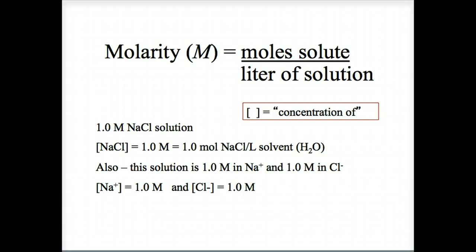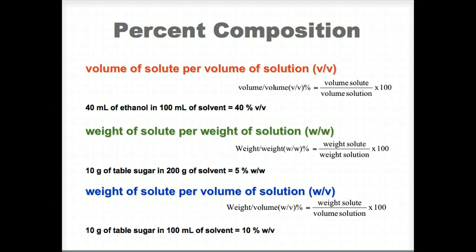Another commonly used concentration unit is molarity. Because chemists use moles in chemical equations, molarity is useful for measuring components of chemical reactions. Note that brackets indicate a concentration using the unit of molarity. Percent composition is also used by environmental chemists — it can be either volume per volume, weight per volume, or weight per weight, depending on the physical state of the reagents used.